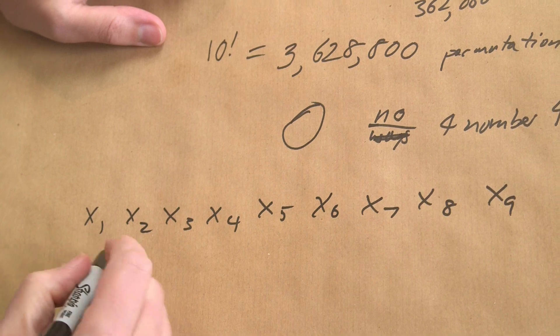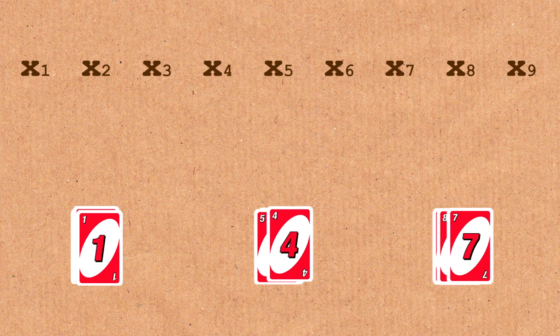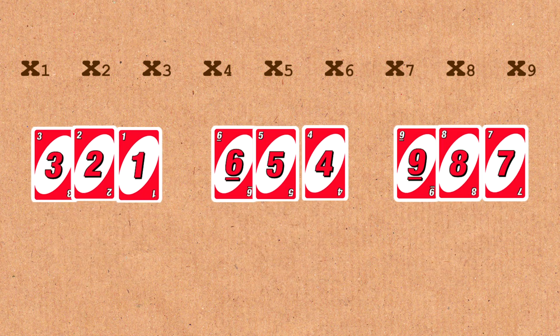And what do we have before? We had three, two, one, six, five, four, nine, eight, seven.